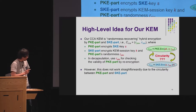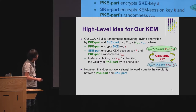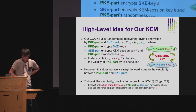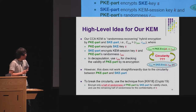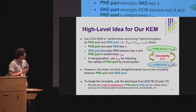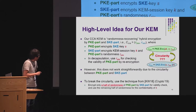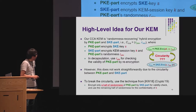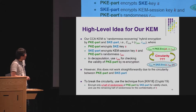However, this does not work straightforwardly due to circularity between the PKE part and SKE part. Namely, to hide the session key K, we have to hide the secret key S, but S is encrypted here. To argue security about this, we have to hide the randomness, but that randomness also appears here — so we have circularity. To overcome this, we use a technique developed by Peikert and Waters, which was explained in an earlier talk today. At a high level, we encrypt half of the randomness used for the PKE part by the SKE part for validity checking, and use the remaining half for hiding the information of K.